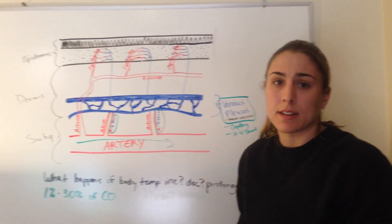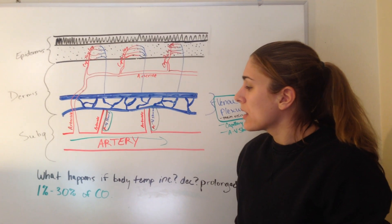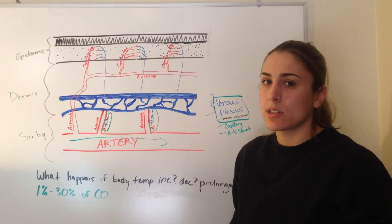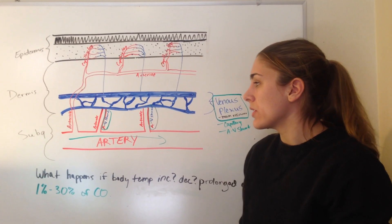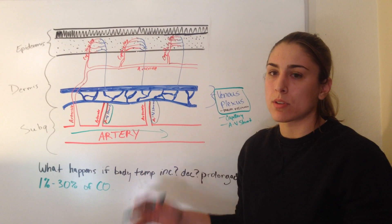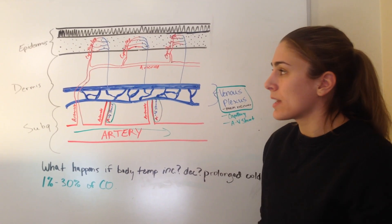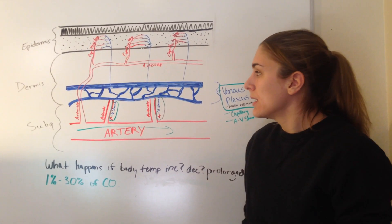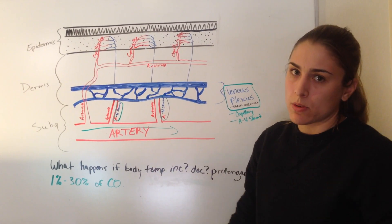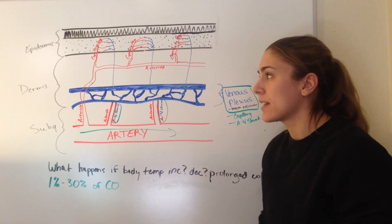Hey guys, sorry I couldn't be there. I have a lot of questions on cutaneous circulation, in particular the AV shunts, so I thought I'd just go over it on the whiteboard. It made more sense to me than when I typed it out. Everything else is still on the PowerPoint, and this will be on the PowerPoint too, so you guys can have it.